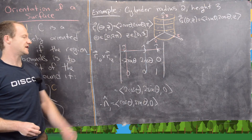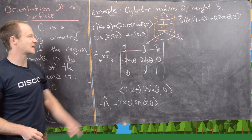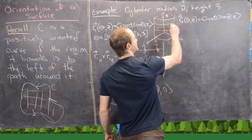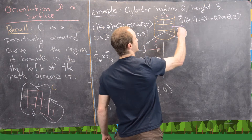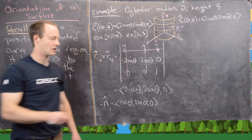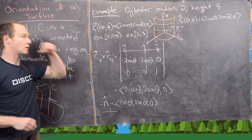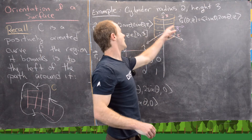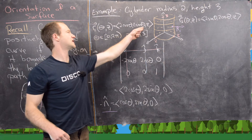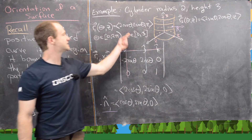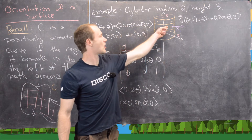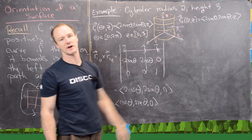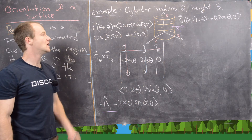Drawing this in our picture, notice that n1 is going to be outward pointing. That's because the point on the surface is given by (2 cos theta, 2 sin theta, z), so the 2 cos theta and 2 sin theta are already taking us from the z-axis outward, and the normal vector just keeps pointing in that outward direction.